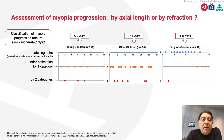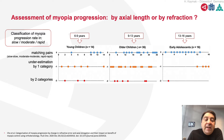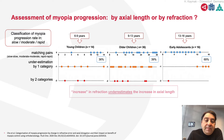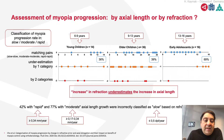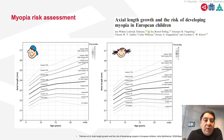When asking about the assessment of myopia progression by axial length or by refraction, the answer is very clear — it's the axial length, because the increase in refraction underestimates the increase in axial length. This is the result of this study, so biometry is very important.